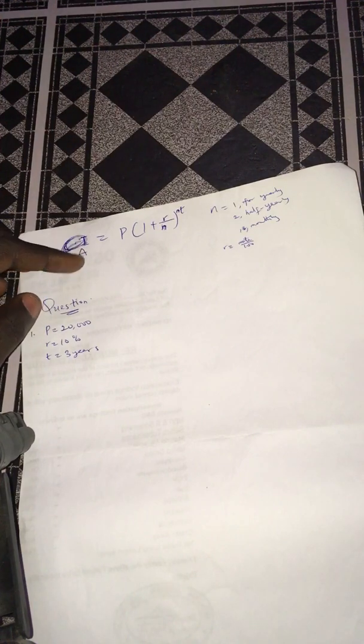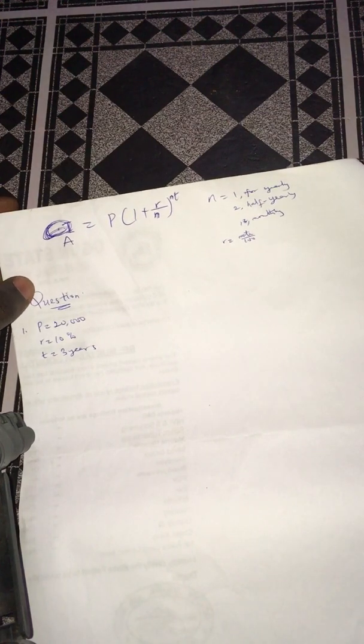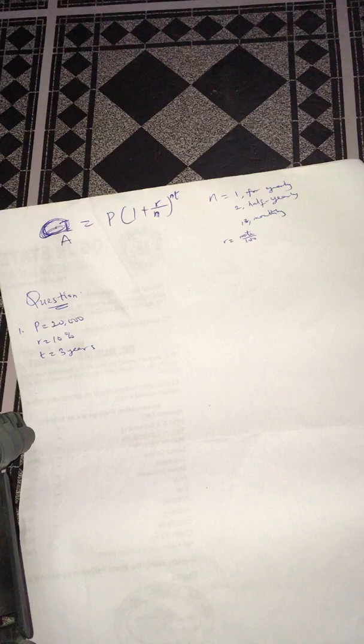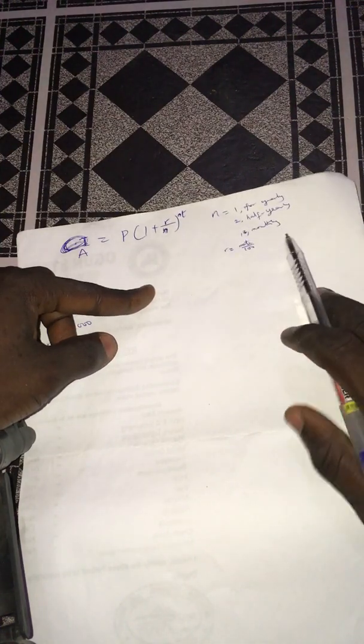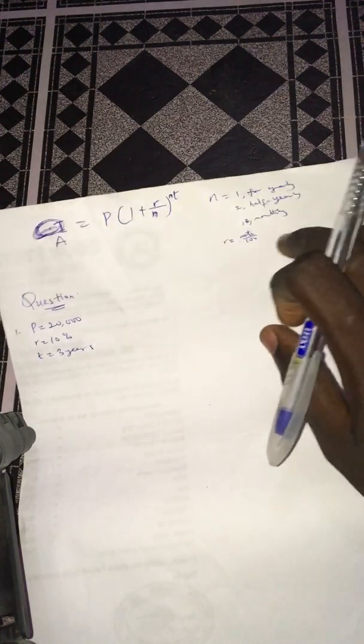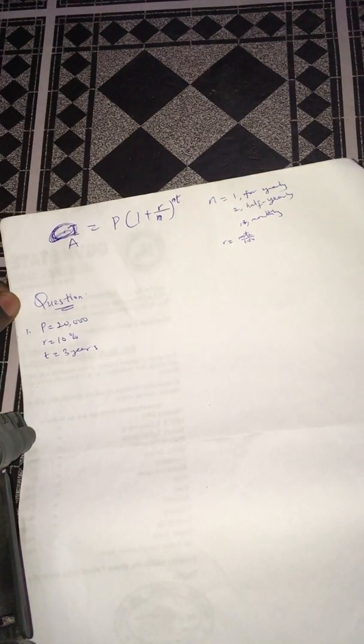Basically, we already know that the formula for compound interest is A = P(1 + r/n)^(nt). We know that n equals 1 if we're calculating yearly, n equals 2 if calculating half-yearly, and 12 if calculating monthly. The rate itself is whatever rate we're given over 100.